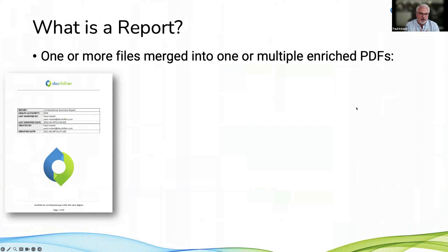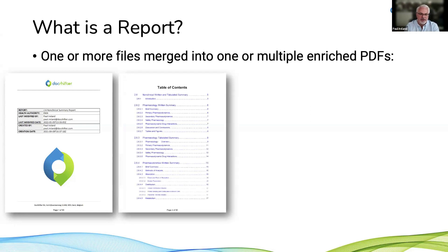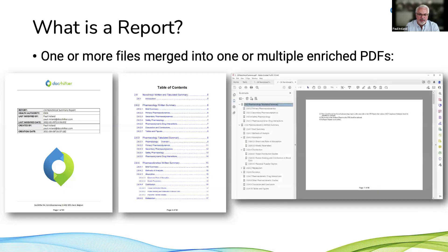So, what a report actually is: when we talk about a report, it's one or more files that are merged together into one or more enriched PDF files. We're going to take multiple individual source documents, merge them together, and enrich them to generate a report in either one or multiple PDFs. We may add cover pages at the beginning, merge files, add a table of contents that spans the entire report — so not just individual document TOCs, but an overall report-level table of contents for all the content in that binder.